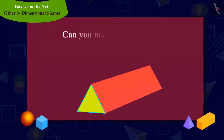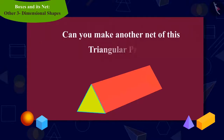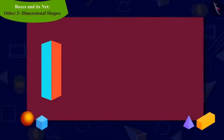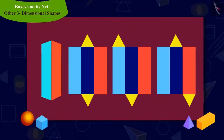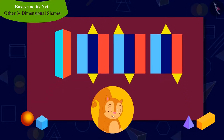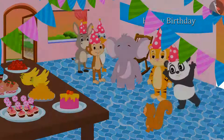Kids, can you make another shape of a triangular prism? You can pause the video to find the answer for this question. Well done, kids! You can also make a shape of net of a triangular prism in these ways. You solved the confusion of Chanda by making these shapes of nets.